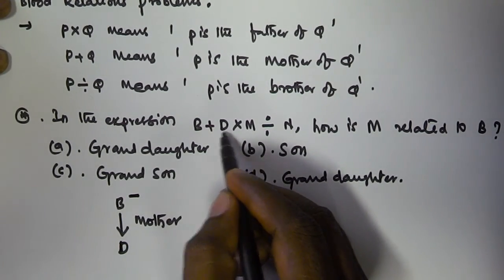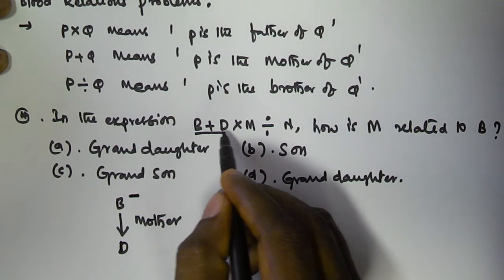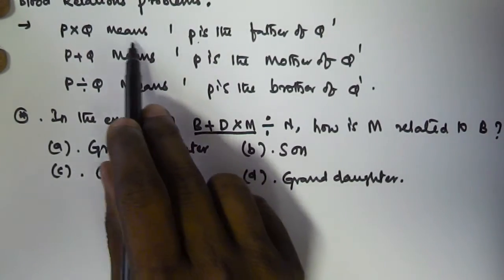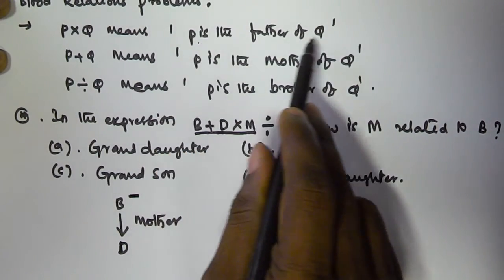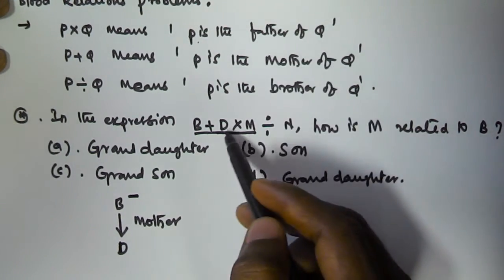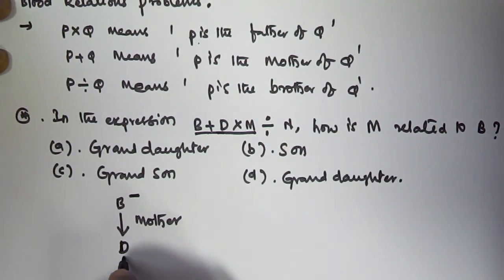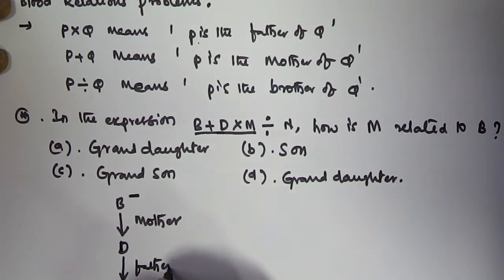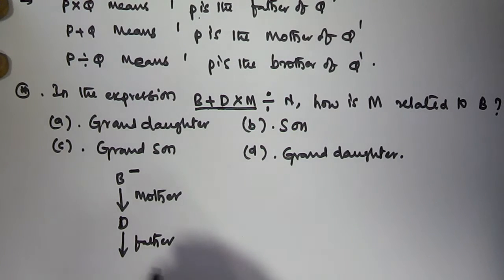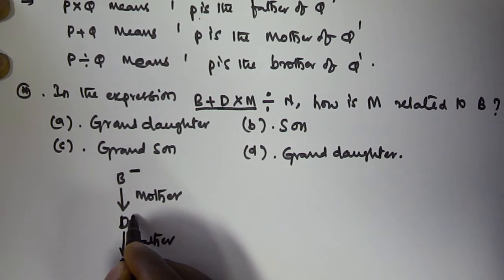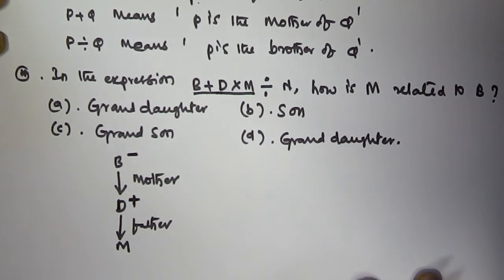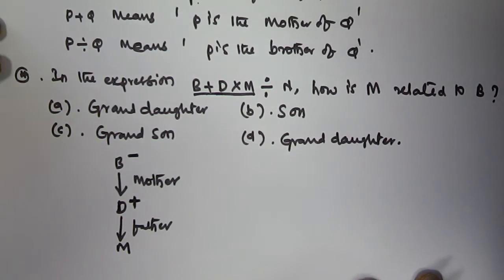Next we take D × M. P × Q means P is the father of Q, so in the same manner D × M means D is the father of M. That means D is a male.